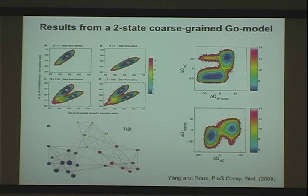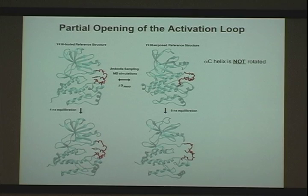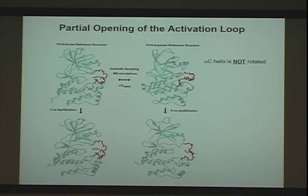One thing that is true is if you incubate the catalytic domain alone in solution, it will trans-phosphorylate — a trans-process meaning another kinase comes in a bimolecular encounter and phosphorylates that loop. So anytime you think of that, the loop has to be at least open enough so that the tyrosine is accessible. This is work that Nilesh Banavali did. We tried to construct two endpoints: one is just the inactivated conformation of the catalytic domain, and the other is a hypothetical intermediate state where the helix has not rotated but the loop is opening up, as in the active domain.